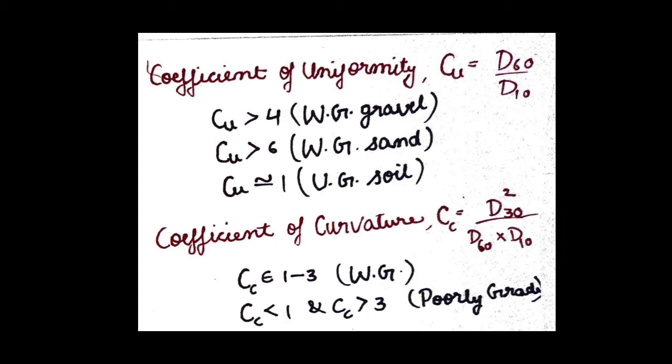The range of values of coefficient of uniformity: If Cu is greater than 4, it is considered well-graded gravel. If Cu is greater than 6, it is considered well-graded sand. And if the value of coefficient of uniformity is approximately equal to 1, then the soil is considered uniformly graded soil.